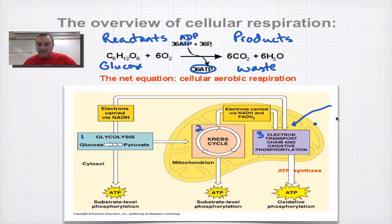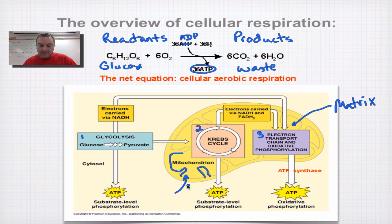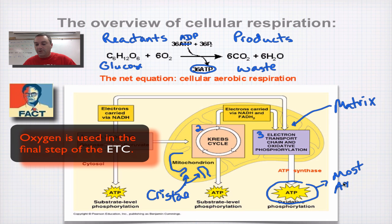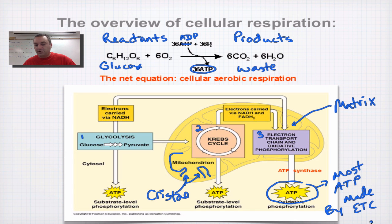The inside area of the mitochondria shown in the diagram is the matrix. The electron transport chain occurs on the inner membrane — you can see the folds, which are the cristae. The cristae increase the surface area so we can have lots of electron transport chains. Most of the ATP is made at the electron transport chain, shown by the starbursts in the diagram. Make a note of this — it has a good chance of showing up on a test or quiz.